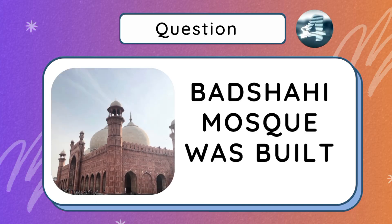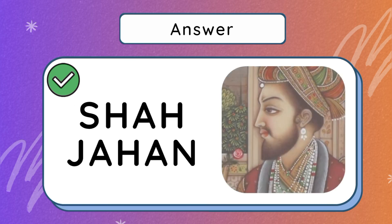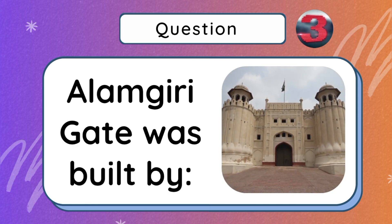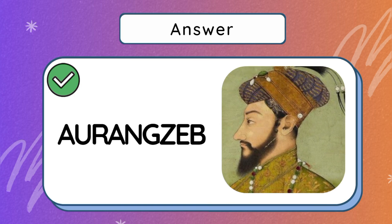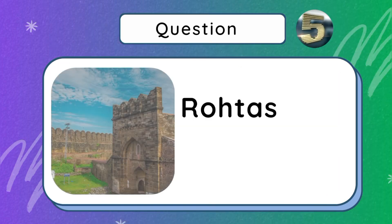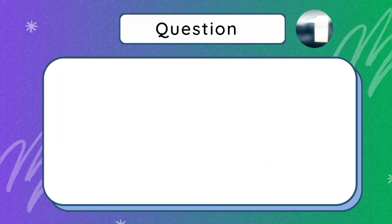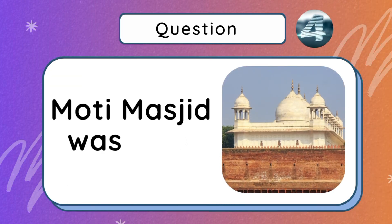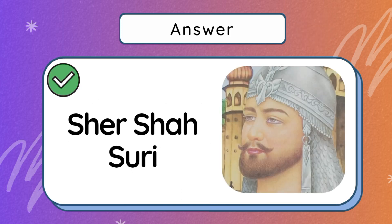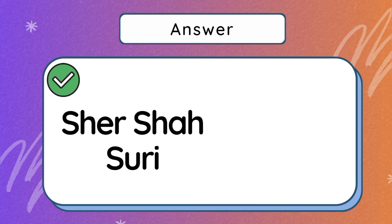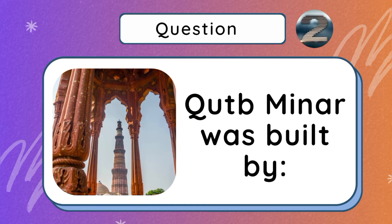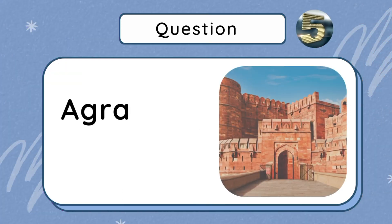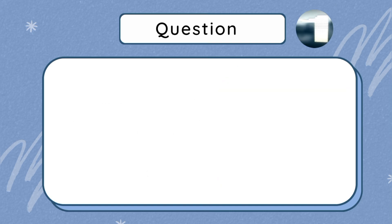Badshahi Mosque was built by Shah Jahan. Alamgiri Gate was built by Aurangzeb. Moti Masjid was built by Shah Jahan.